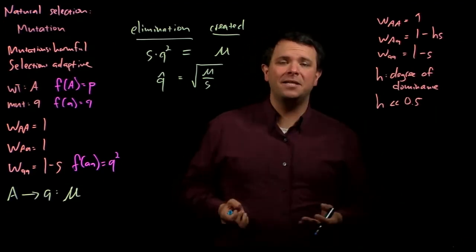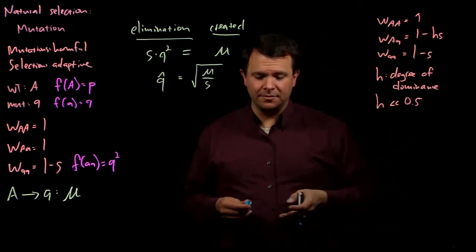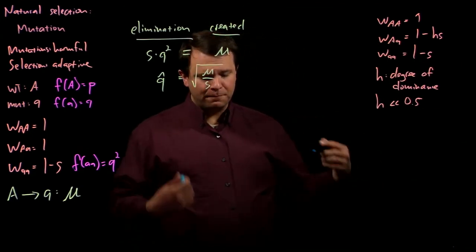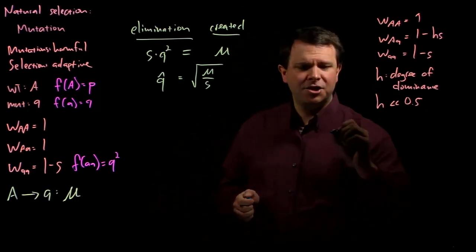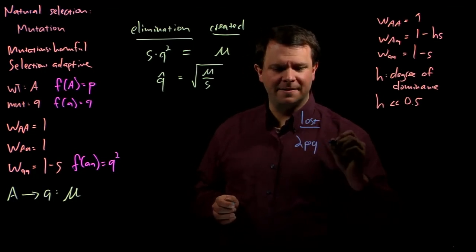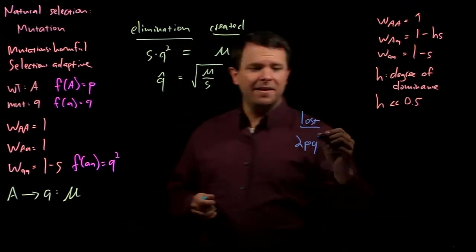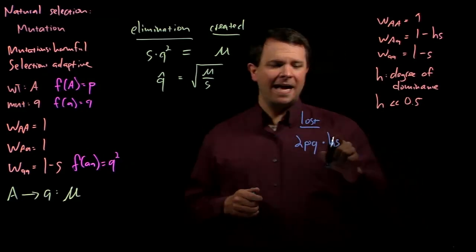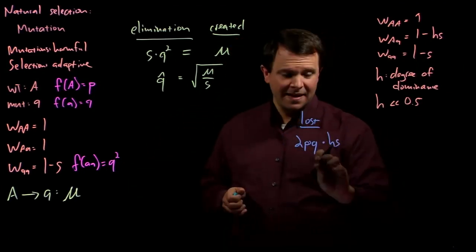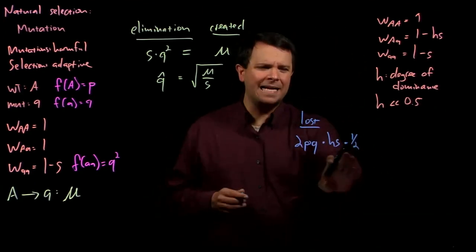That's how much at a disadvantage they are relative to the homozygotes in their ability to reproduce. Each generation, the proportion of alleles that are lost to selection is 2 times P times Q—recall from Hardy-Weinberg, this is the population frequency of the heterozygote—times HS, which is the selective disadvantage that that genotype is under, times 0.5. Why are we adding the 0.5 here?